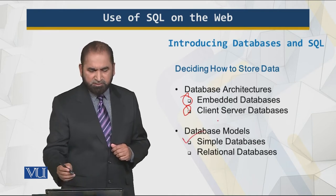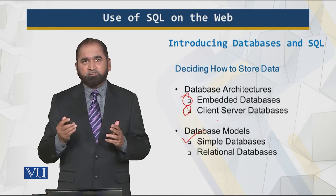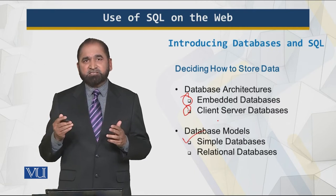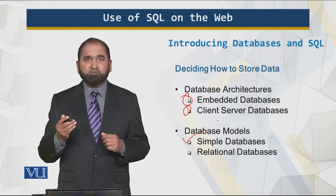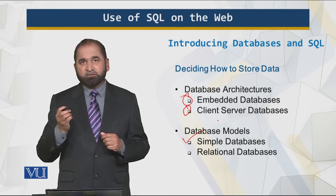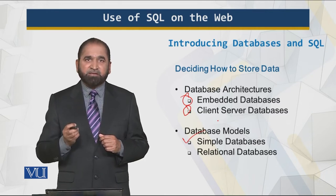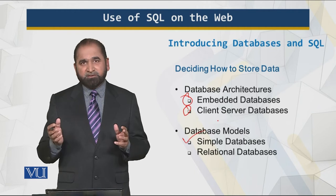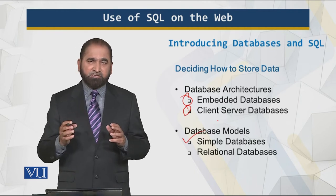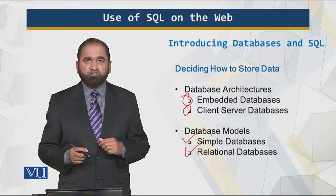Then there are the database models. We have simple database models like simple associative arrays — the data stored there is very simple to process and simple to work with, but it does not have the functionality and power which is there in the relational model. In the relational model, we have tables that are connected together based upon relationships — based upon the foreign key relationship, and of course the primary key as well.